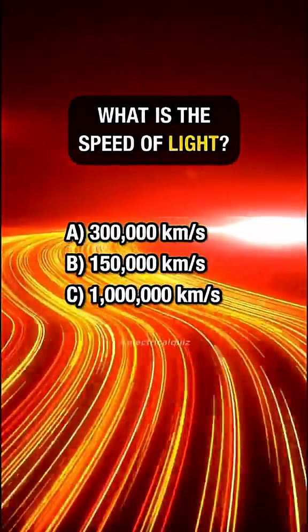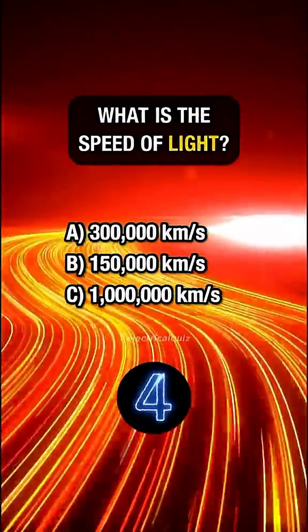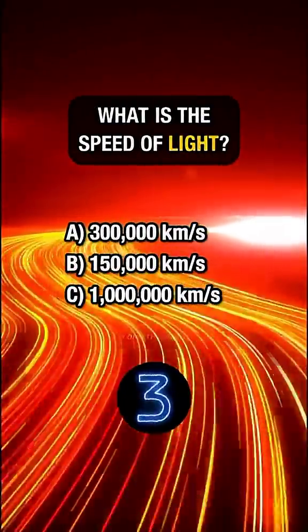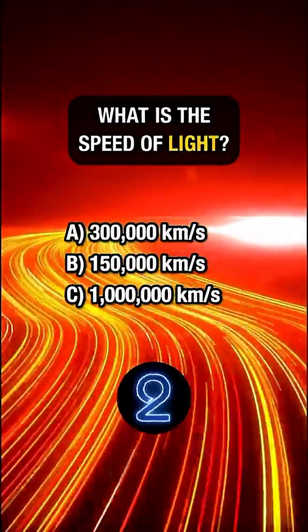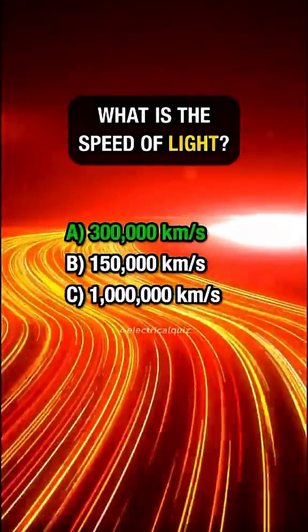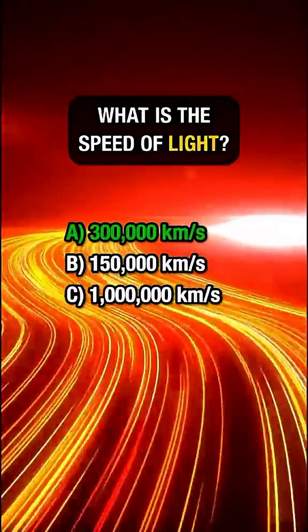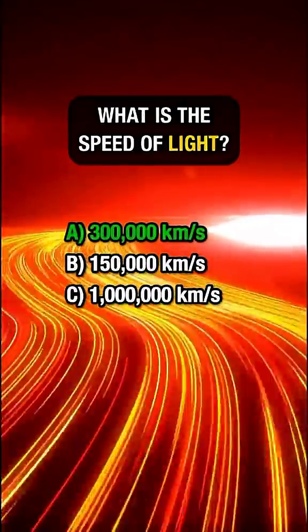What is the speed of light? Answer: A. 300,000 kilometers per second.